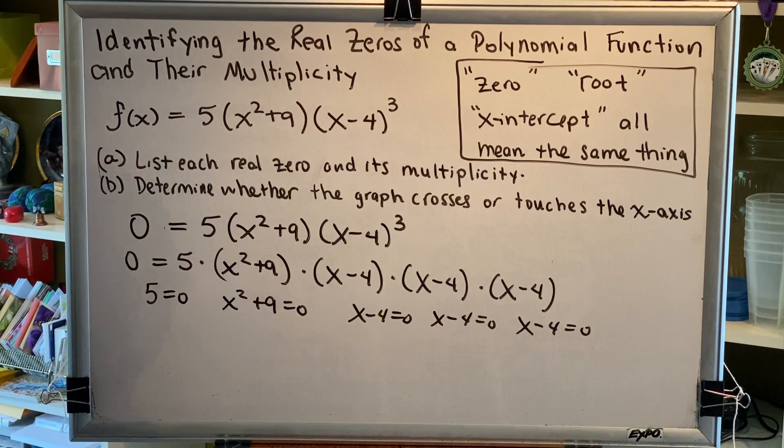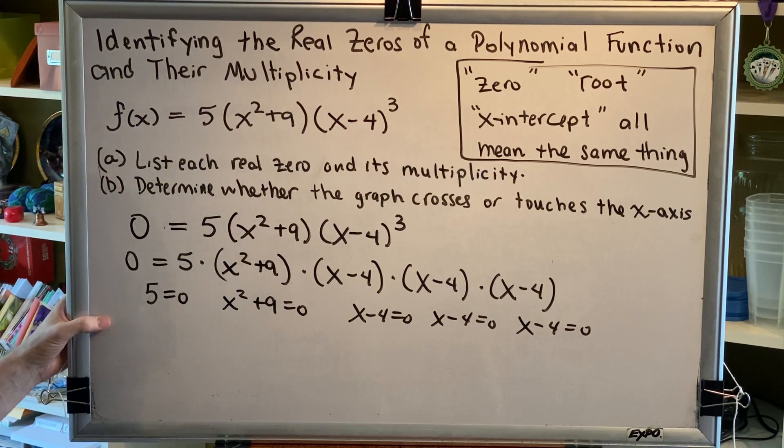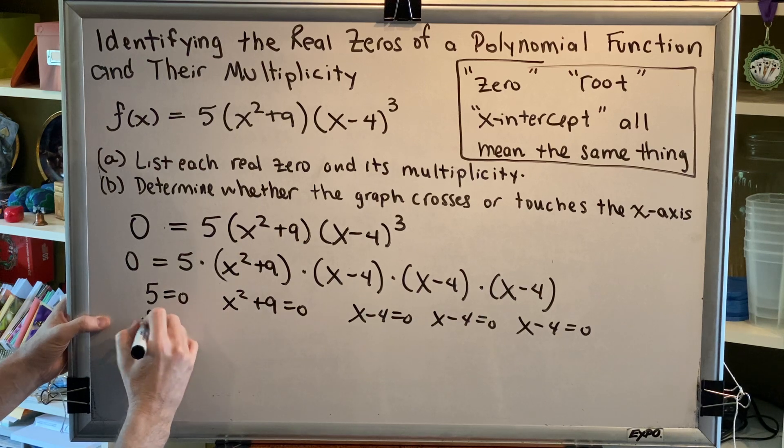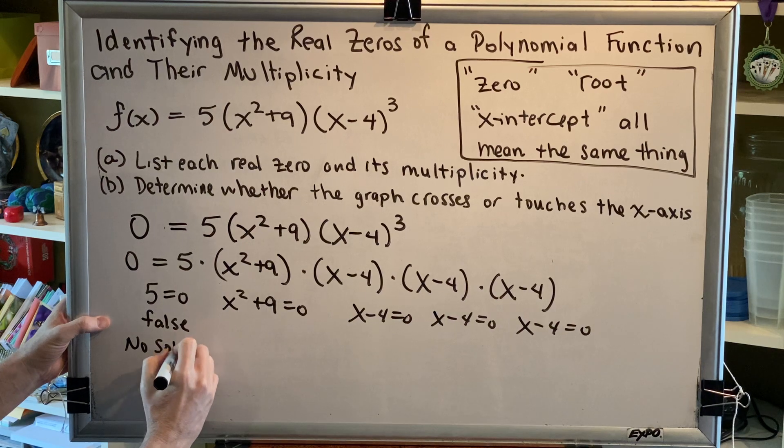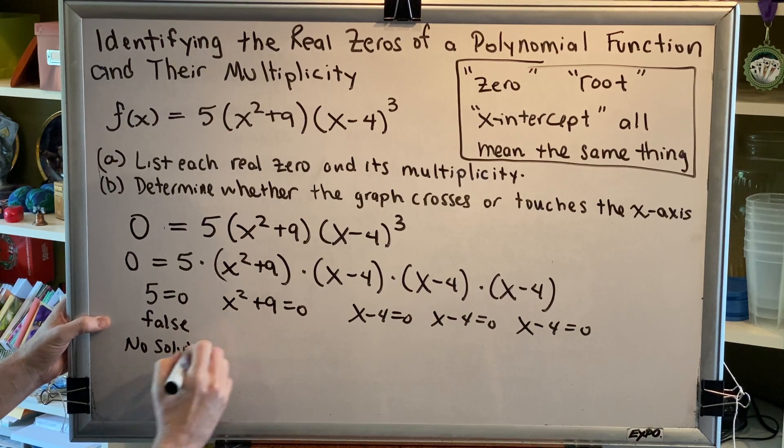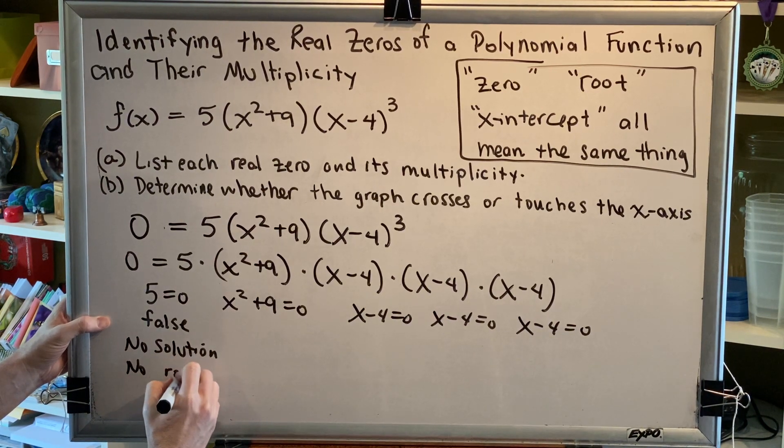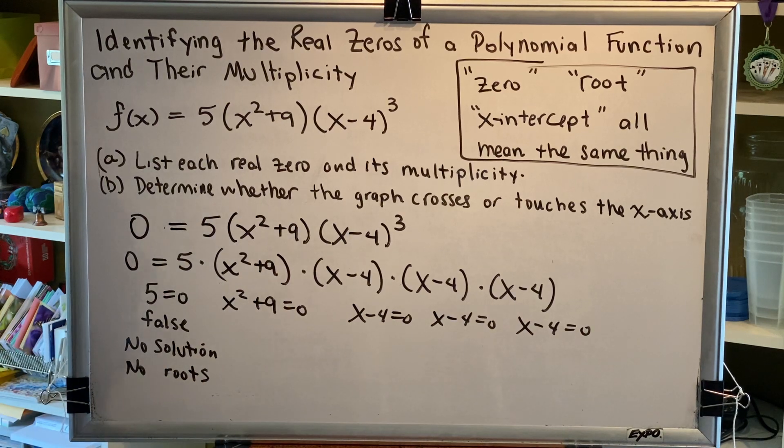Let's see if we can solve these five equations. Beginning with the first one, 5 equals zero: false. This is a contradiction which generates no solution, and therefore this part of our equation generates no roots, no zeros, no x-intercepts.